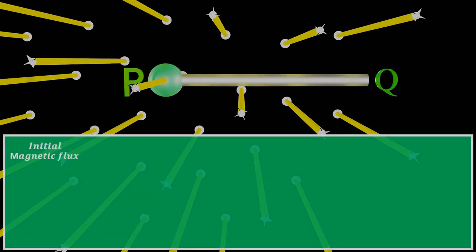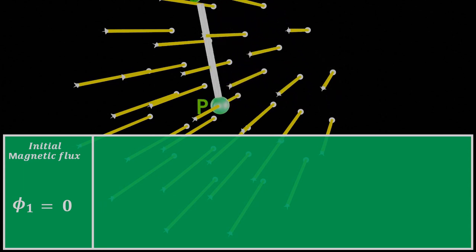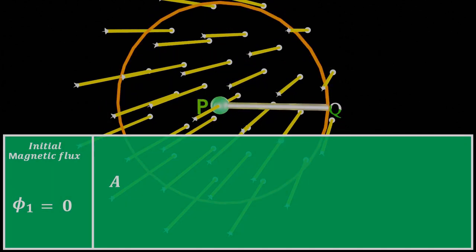Initially, magnetic flux φ₁ linked to a rod is zero. Now, when conducting rod is rotated, then it starts linking to the magnetic field line in an area. That is, π into square of radius R which is L in this case.